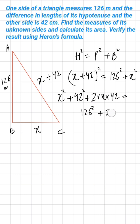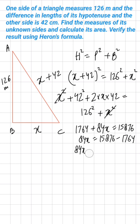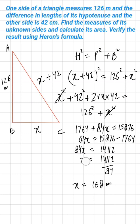The x² terms cancel from both sides. 42² is 1764, and 2 × x × 42 gives 84x, so: 1764 + 84x = 15876. Then 84x = 15876 − 1764 = 14112. Therefore x = 168 meters.